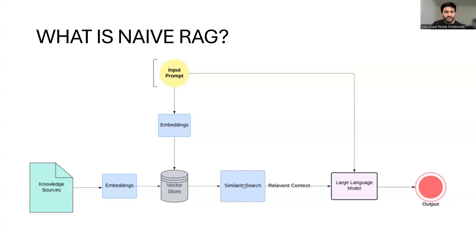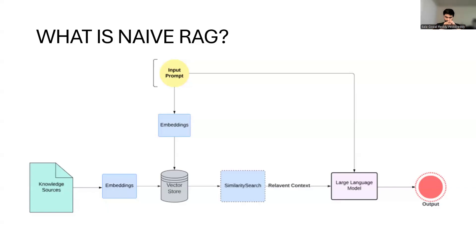The system will find the most similar documents to the query, and these documents will be given to the large language model along with the input query to get the output. This approach is fine as long as you have the requirement to get a response from a specific knowledge base — it's a pretty straightforward response with no complex interactions happening between the components.